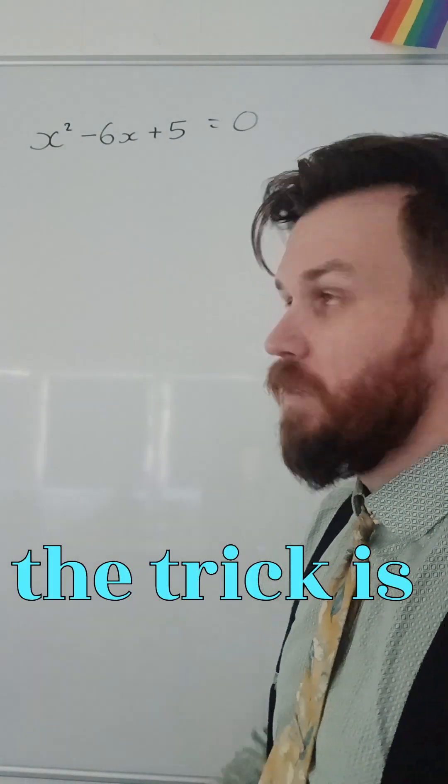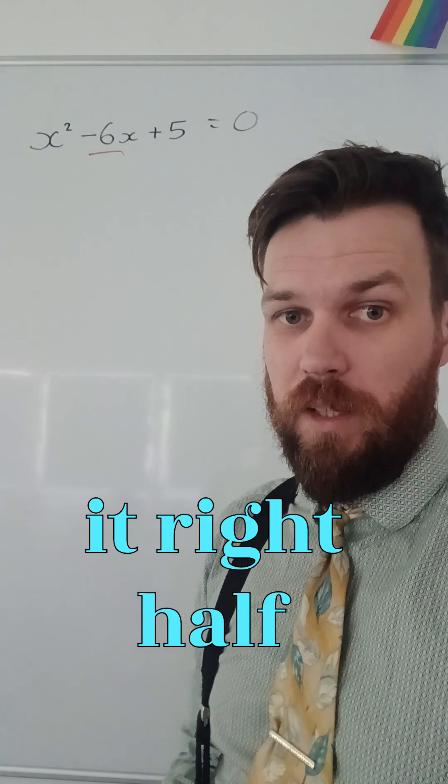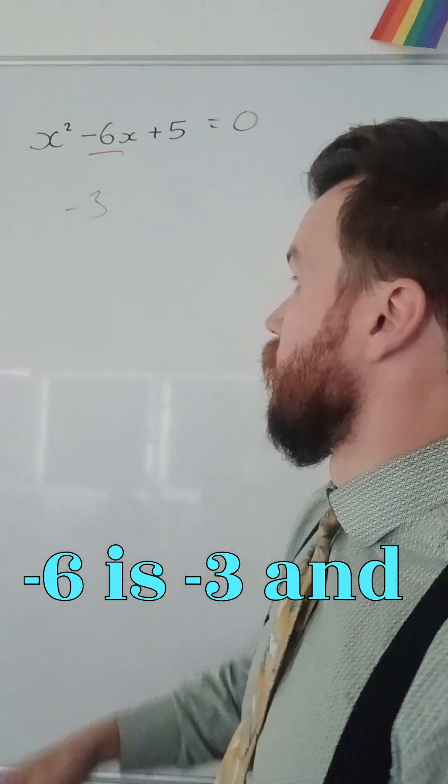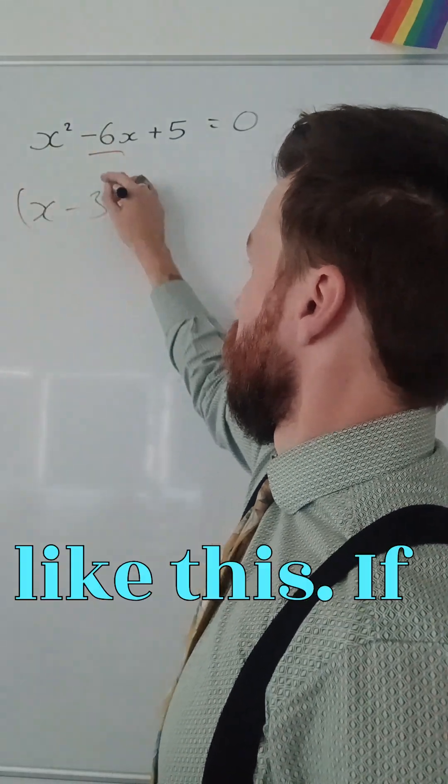The first thing I need to do, the trick, is to take this bit in half here. Half the middle. That's going to be negative 3. Half negative 6 is negative 3, and I've got an x squared, but I want to rewrite it like this.